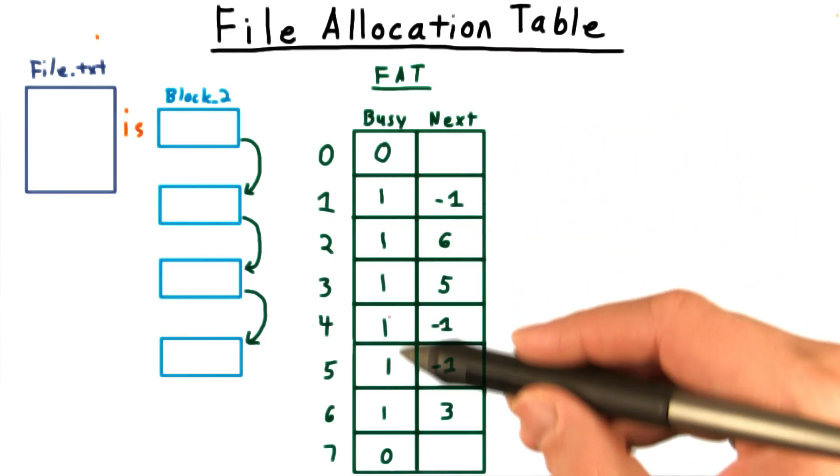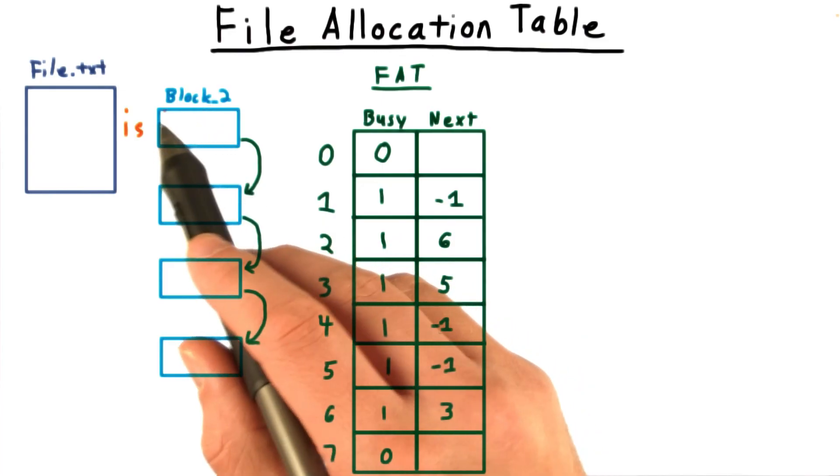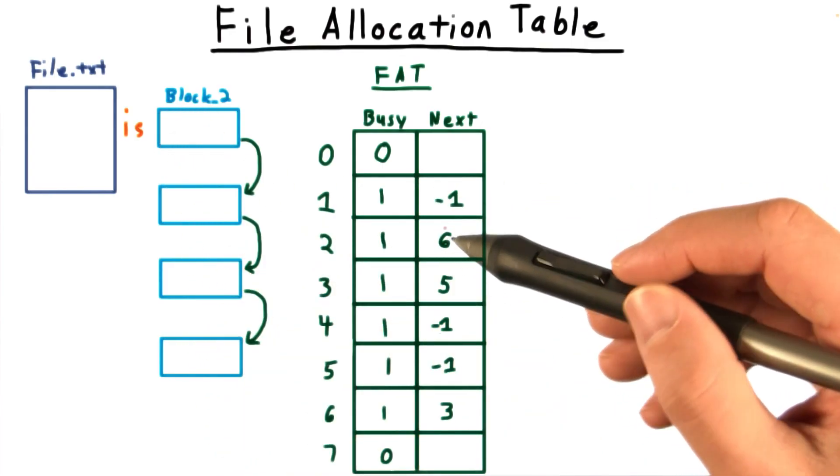This file allocation table also contains a bit to say whether a block is free or not. In this example, our file starts with block 2. Looking at the table, I see that the next block is 6.